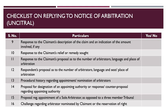The fifteenth item is regarding the proposal for appointment of a sole arbitrator, as opposed to a three-member tribunal, which is the default number of arbitrators in UNCITRAL Arbitration Rules. The sixteenth item in the checklist pertains to the challenge regarding the arbitrator nominated by the claimant, or reservation of right. Usually, the challenge is to be made within fifteen days after having been notified of the appointment of the challenged arbitrator. The timelines of Article 13.1 of the UNCITRAL Arbitration Rules may be noted.